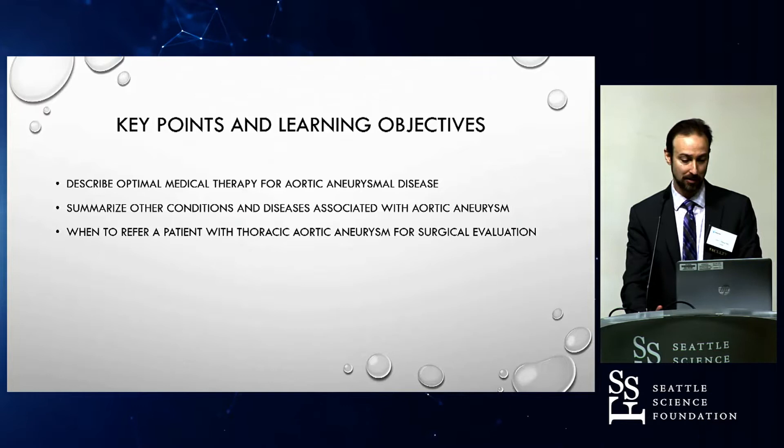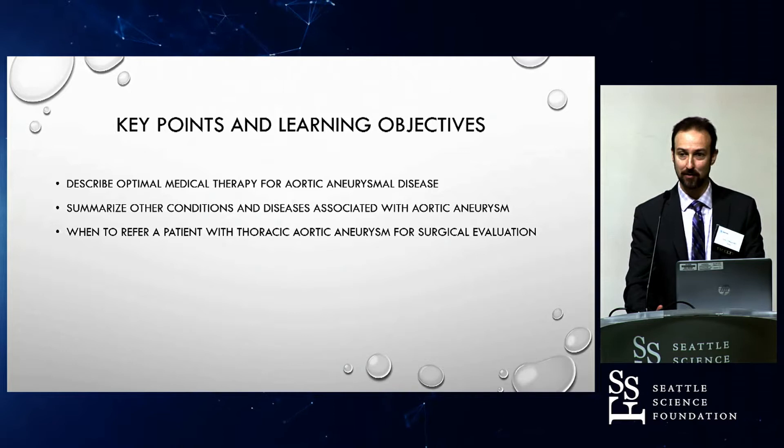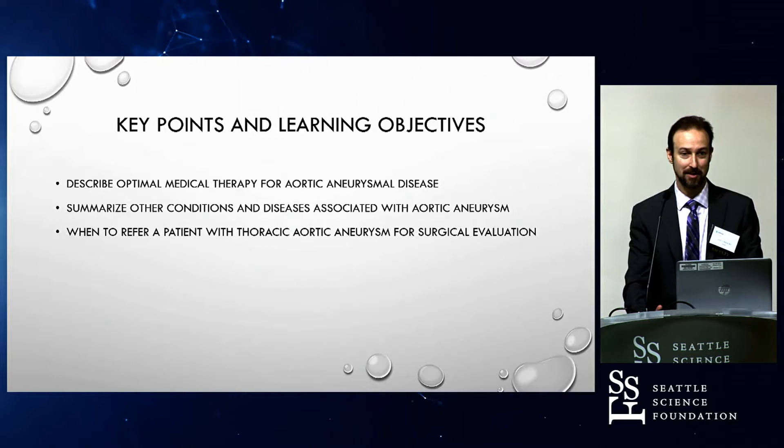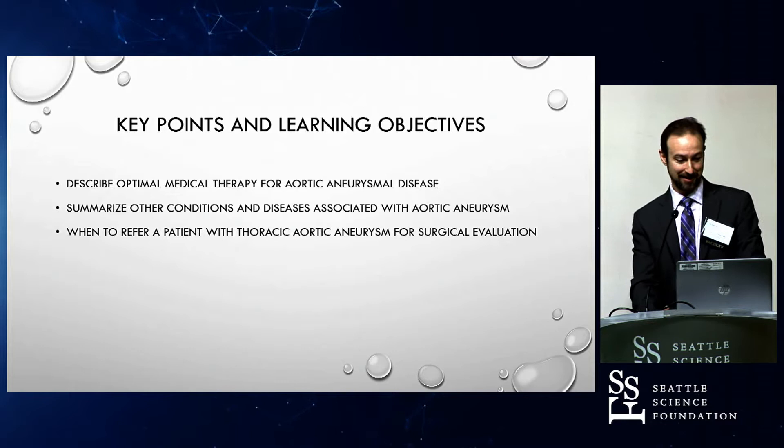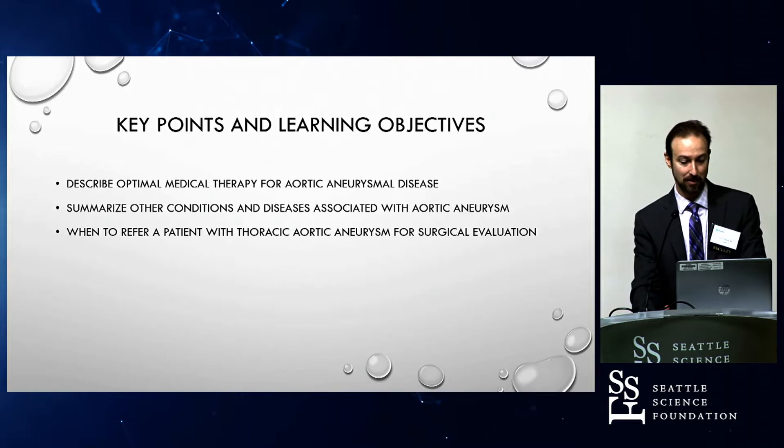We're going to move on to the most recent iteration of the guidelines. Here are the key points and learning objectives. We'll be able to describe the optimal medical therapy for aneurysmal disease of the aorta, summarize a few of the other conditions not mentioned by Dr. Byers, summarize other conditions and diseases associated with aortic aneurysm, and then discuss when to refer a patient with thoracic aortic aneurysm for surgical evaluation.